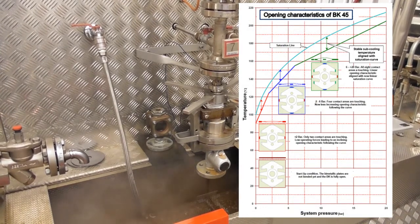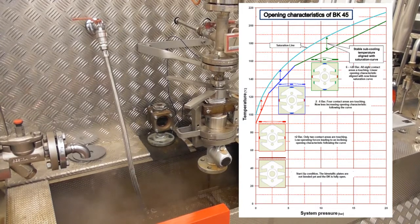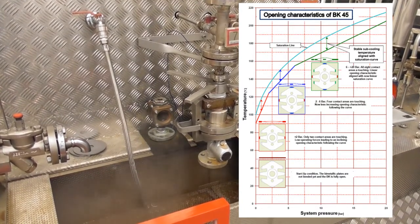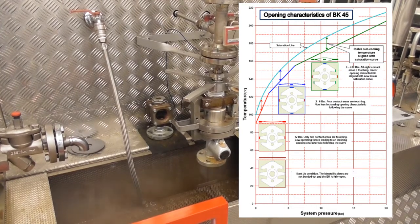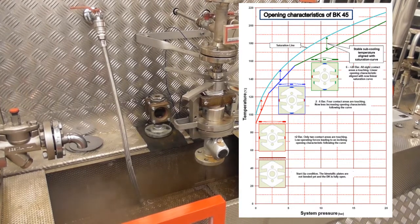To explain this we have to take a look at the saturation steam curve. The blue colored line shows us the saturation temperature according to the pressure of the system. Below the line we're in the water area and above the line we're in the superheated steam area. Below the saturation curve we see the opening characteristics of the BK45. So what's so special now?